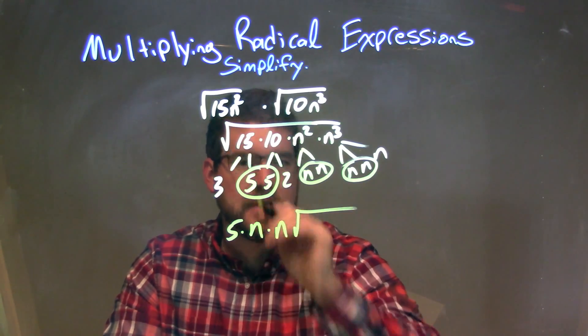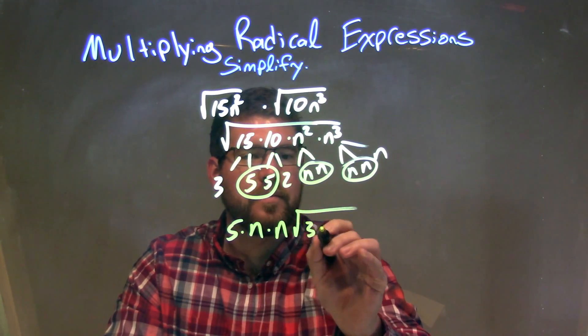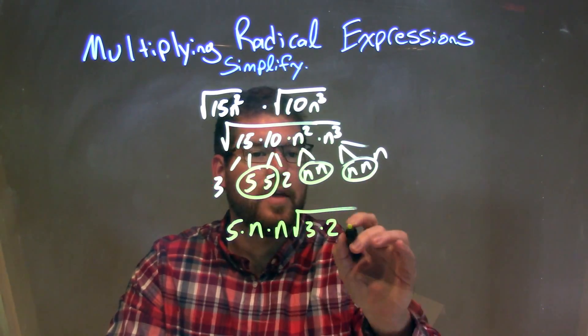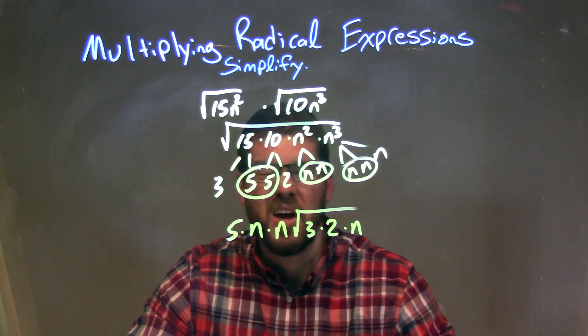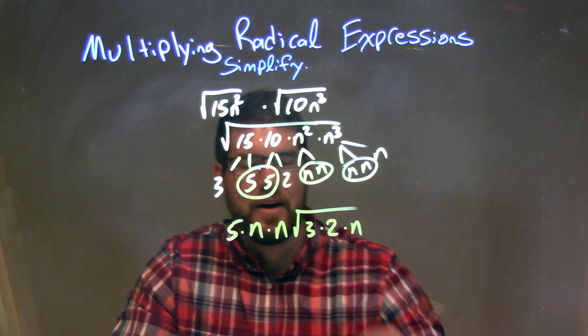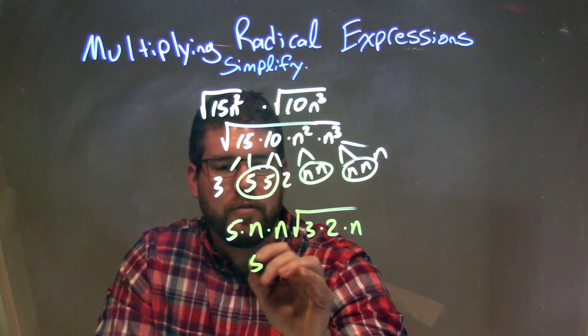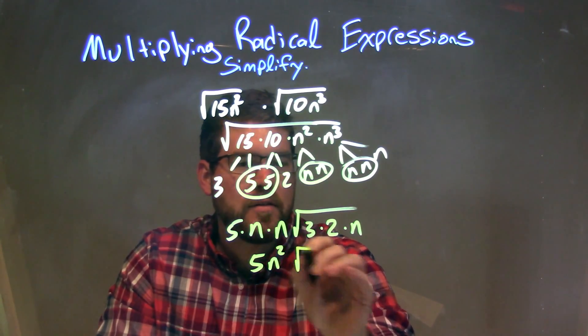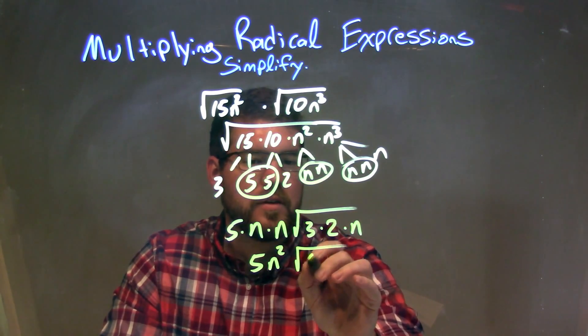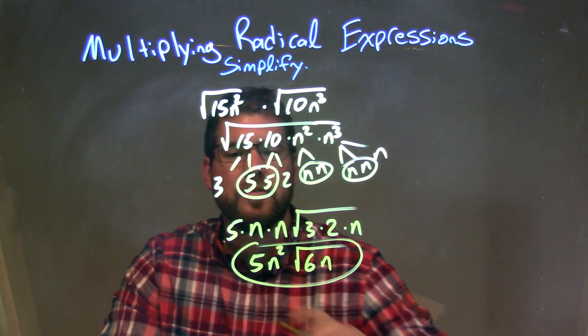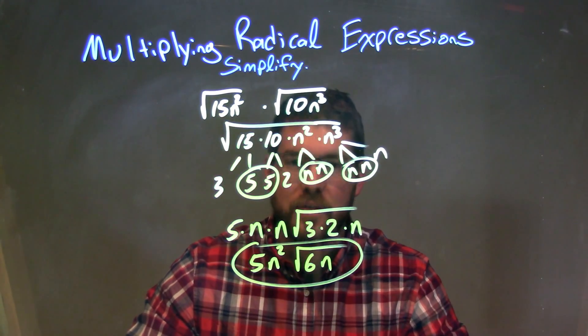On the inside we're left with 3 times 2, the singles, and then that one n. So now all that's left to do is simplify n times n to n squared. So we have 5 times n squared times the square root of 3 times 2, which is 6, 6n. And there we go, our final answer is 5n squared times the square root of 6n.